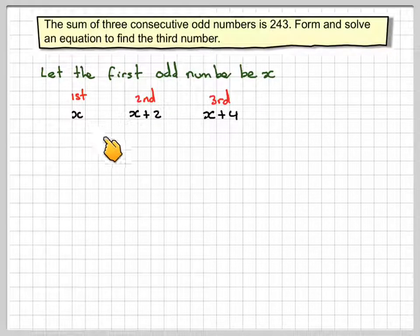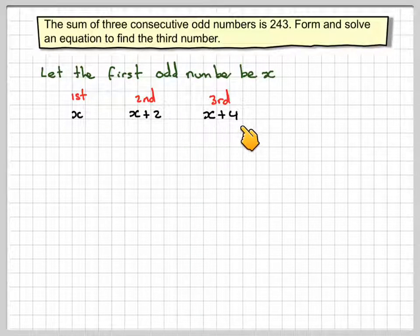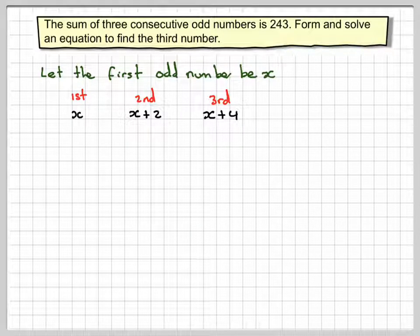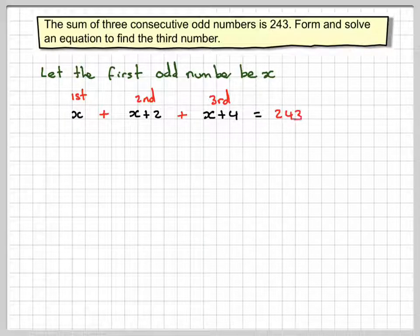And then the third one will be x plus 2 plus 2, which is x plus 4. Now we're told that the sum of these numbers add up to 243.